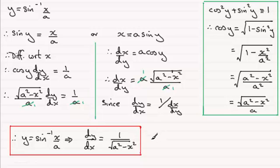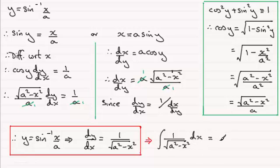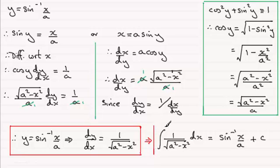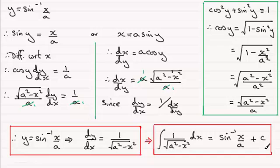The direct spin-off of this is that it follows that if we integrate 1 over the square root of a squared minus x squared with respect to x, the result must be the inverse of differentiation — it equals the inverse sine of x divided by a, plus a constant of integration c. It's well worth remembering this result; you'll generally find it in your formula book. When a equals 1, the integral of 1 over the square root of 1 minus x squared with respect to x equals the inverse sine of x plus c.